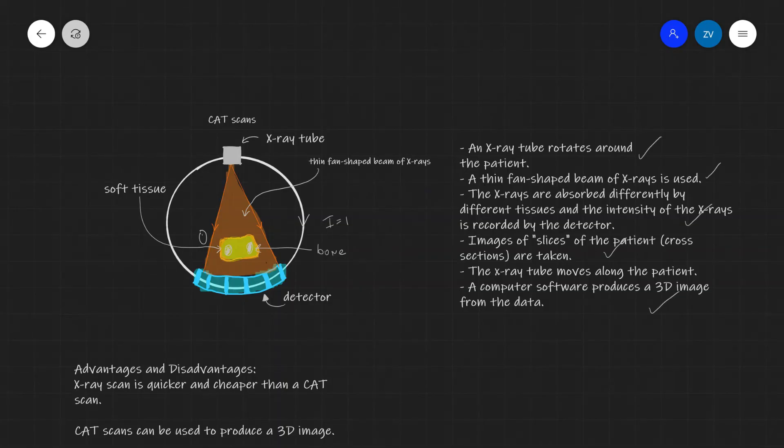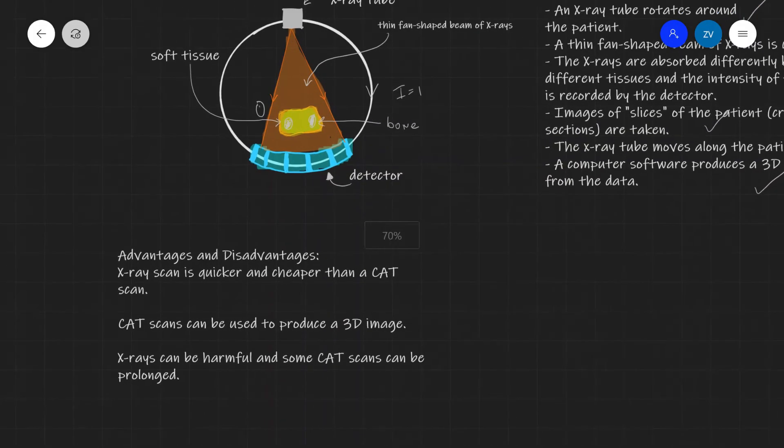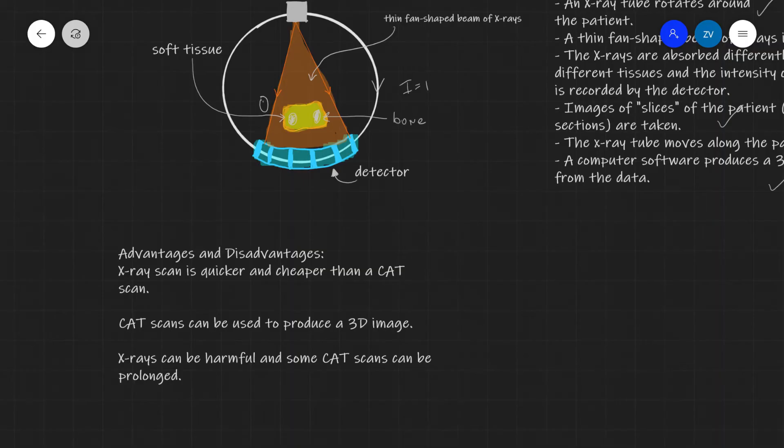This is one of the main advantages of a CAT scan compared to an x-ray. And I've summarized some of the advantages and disadvantages of CAT scans compared to x-rays. Well as we said CAT scans can be used to produce a 3D image which is a major advantage. In addition they can distinguish better between different types of soft tissue which is extremely hard or almost impossible in x-ray scans.